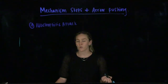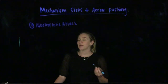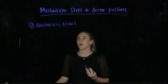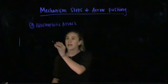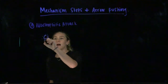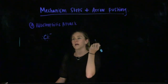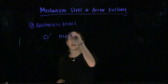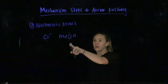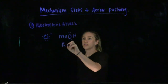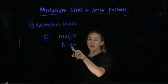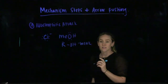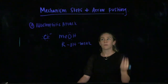A nucleophile is going to be something that has a lot of free electrons that it can use to react. A good example of a nucleophile is an anion, something like chloride. It could also be something like MeOH. However, when you have an R group connected to a hydroxyl group, this is always going to be a weak nucleophile — but it is still a nucleophile and will still perform a nucleophilic attack.